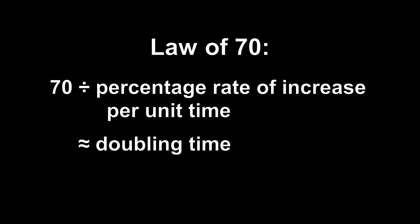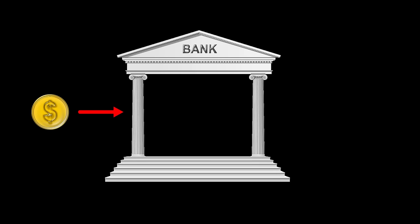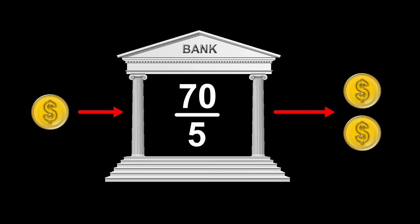Just divide 70 by the percentage growth rate, and the result will be the approximate doubling time. For instance, if you put money in a certificate of deposit with a 5% return, your money will double in face value in about 14 years. With a 7% return, 10 years. With a 2% return, 35 years.